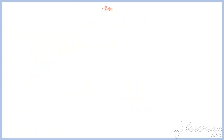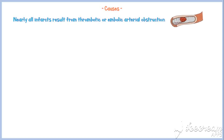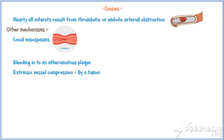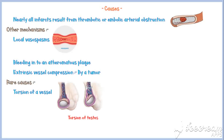Let's discuss the causes of infarction. Nearly all infarcts result from thrombotic or embolic arterial obstruction. Occasionally, infarctions are caused by other mechanisms, including local vasospasms, bleeding into an atheromatous plaque, or extrinsic vessel compression by a tumor. Rare causes of infarction include torsion of a vessel, such as torsion of the testis and intestinal volvulus.